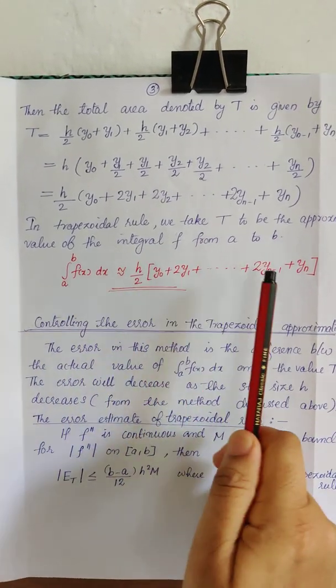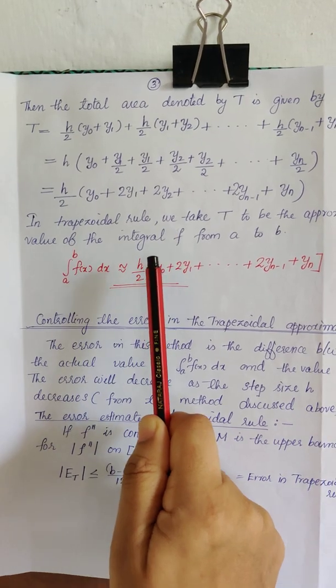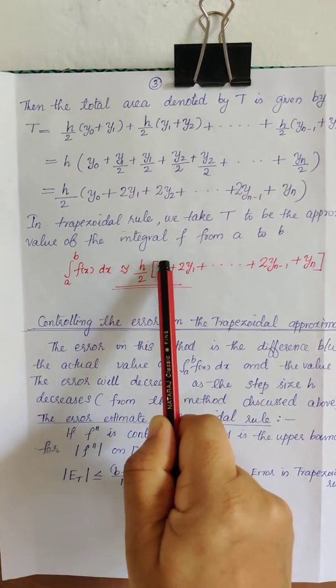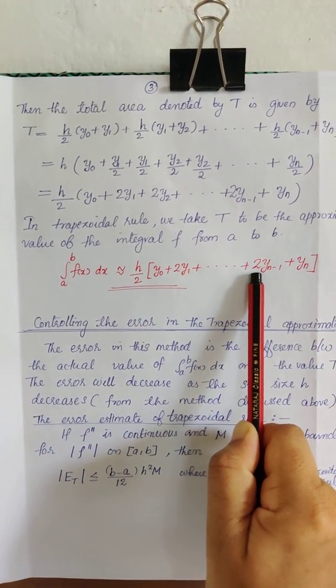This is the first y value coefficient 1, last y value coefficient 1. Other coefficients are 2, 2, 2.